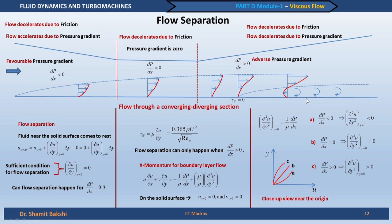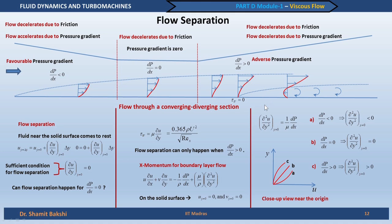If there is a sufficiently long adverse pressure gradient region in a converging-diverging section, a recirculating region will form within the flow. This slide gives an overview of how boundary layer flow characteristics change with different pressure gradients: favorable (dp/dx < 0), zero (flat plate), and adverse (dp/dx > 0) — the last of which can lead to flow separation and a recirculating wake region.